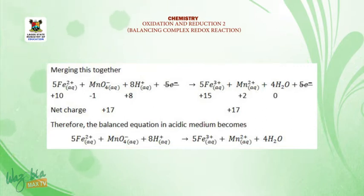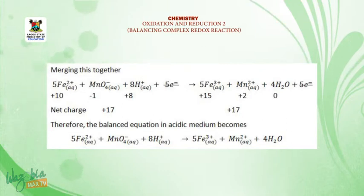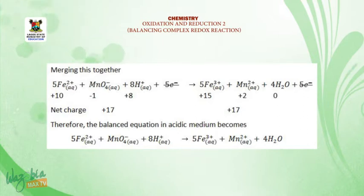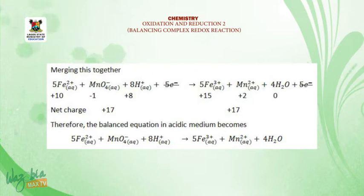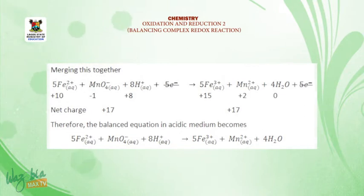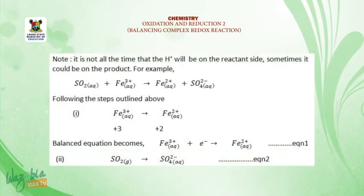For the reactant side: +10 − 1 + 8 = +17, and on the product side: +15 + 2 + 0 = +17. Therefore, the balanced equation in acidic medium is: 5Fe²⁺ + MnO₄⁻ + 8H⁺ → 5Fe³⁺ + Mn²⁺ + 4H₂O. Note: it is not always the case that hydrogen ions will be on the reactant side — sometimes they will be on the product side.